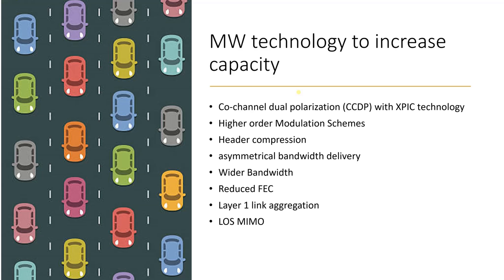One option is to increase the width of the road — more cars can pass through, which represents microwave bandwidth. Second is increasing the speed of the cars — more cars pass in the same duration, which represents modulation. Third is introducing an additional lane or parallel road, which represents adding an additional carrier in the microwave link.